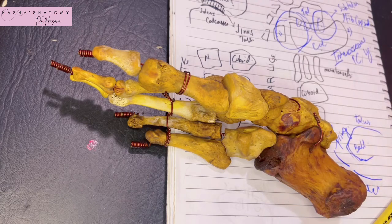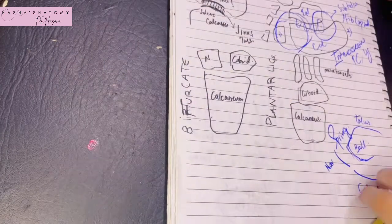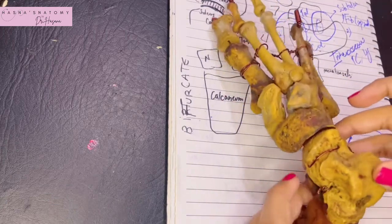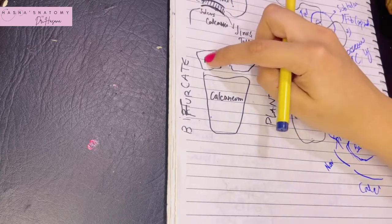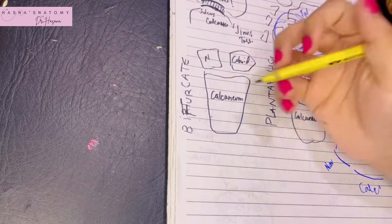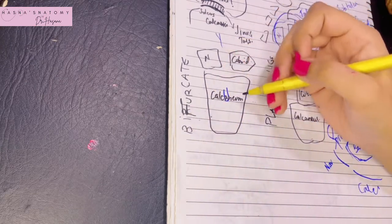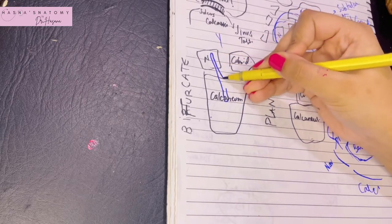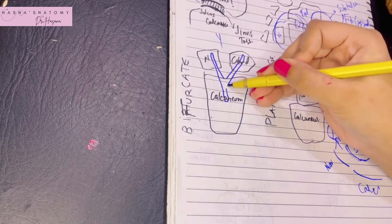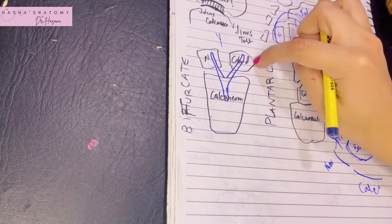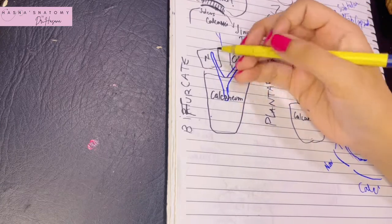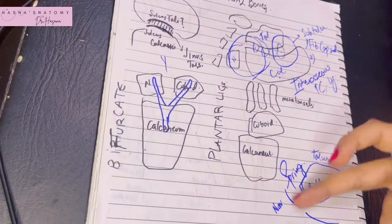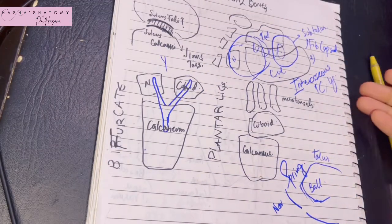The bifurcate ligament, seen from the top view with the talus removed, is Y-shaped. Its stem is placed on the calcaneum bone, its medial limb is attached to the navicular bone, and its lateral limb is attached to the cuboid bone. The lateral limb takes part in the calcaneo-cuboid joint, while the medial limb takes part in the talo-calcaneo-navicular joint. Other ligaments holding this joint are the interosseous talo-calcaneal ligament and the talonavicular ligament.